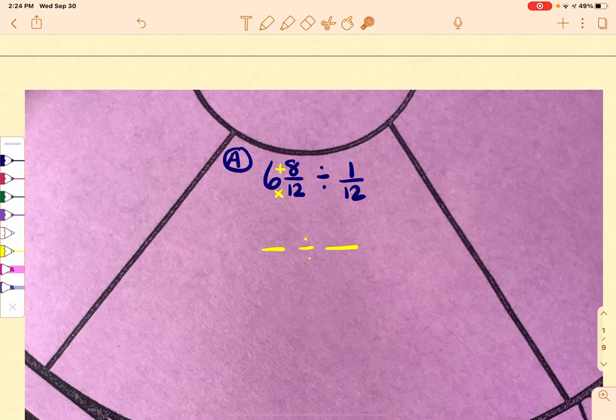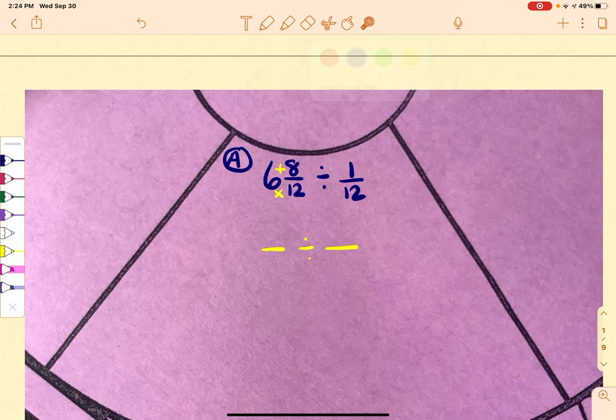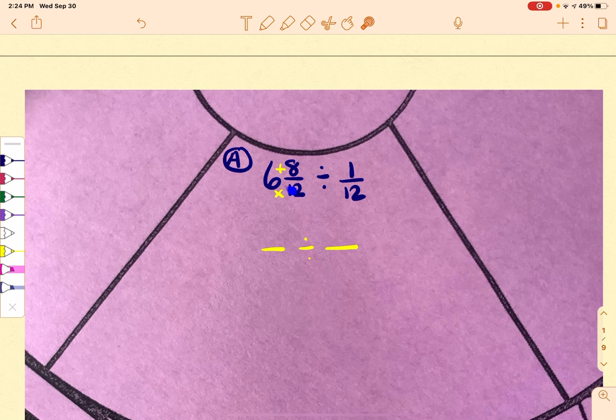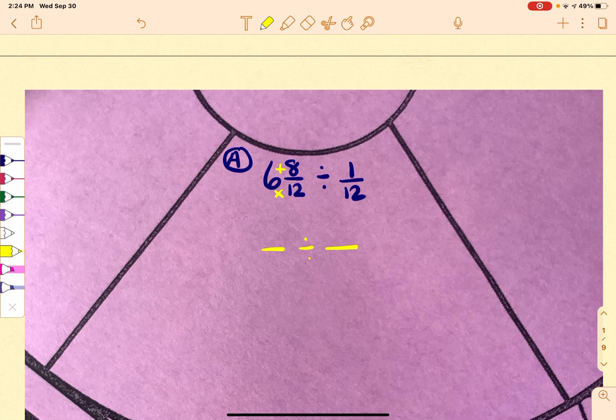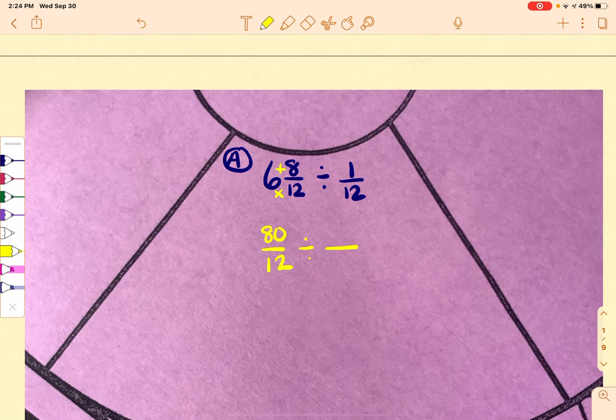So I'm going to have to go through changing this. So 12 times 6, I'm going to do this part right here. It's going to be 72 plus the 8 that's on the top is going to give me 80. So 80 over 12.